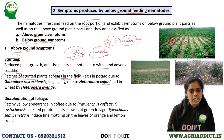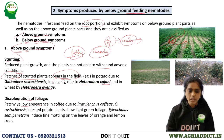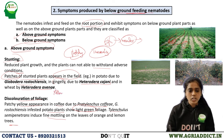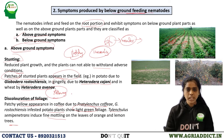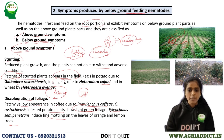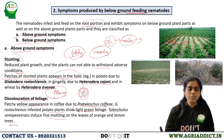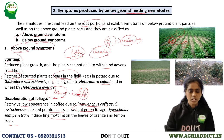Discoloration of foliage is another above-ground symptom. Patchy yellow appearance in coffee is due to Pratylenchus coffeae. Globodera rostochiensis infesting potato also shows light green foliage. Tylenchulus semipenetrans induces fine mottling on the leaves of orange and lemon trees. Yellowing is a common symptom caused by nematodes — even with sufficient moisture and nutrients in the soil, the plant is unable to extract them due to nematode damage, causing symptoms similar to nutrient deficiency.